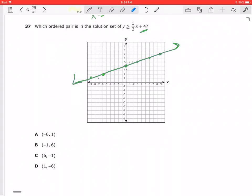So it says y is greater than 1/3x plus 4. I'm gonna look at the point (0, 0). If I plug in (0, 0): is 0 greater than or equal to 4? No, so I need to shade on the opposite side.